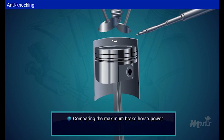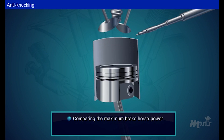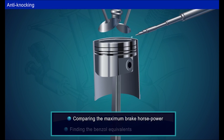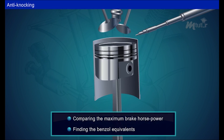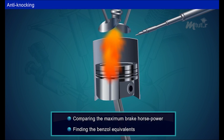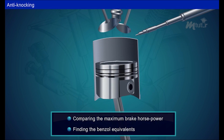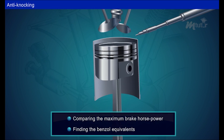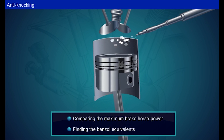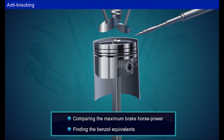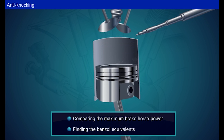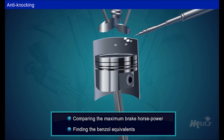The Kansas City Testing Laboratory, using a single-cylinder stationary engine, rates fuels by two methods: comparing the maximum brake horsepower and finding the benzol equivalents. Investigators at the Universities of Iowa use a two-cylinder motorcycle engine to rate fuels in terms of the brake mean effective pressure at which knocking begins, under identical operating conditions.